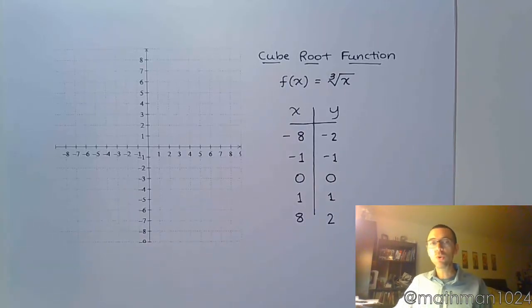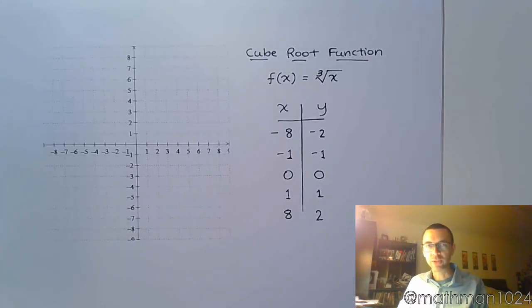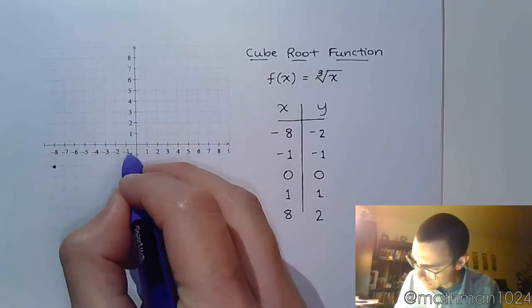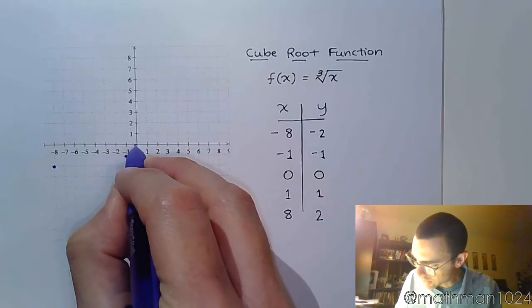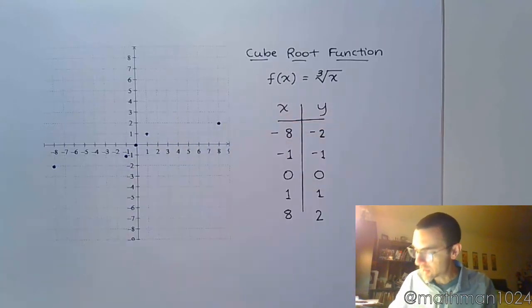These are key points that you need to know, you need to have memorized, so that when it comes to graphing later on, it's going to be a simple thing for you. So I get negative 8, negative 2, negative 1, negative 1, 0, 0, 1, 1, and 8, 2.